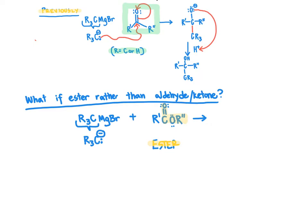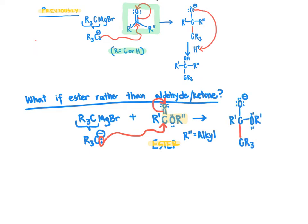That R prime group absolutely has to be an alkyl group in order for this to meet the definition of an ester — we have to have an O-alkyl group there, and that's going to be important to the outcome of this reaction. The first thing we expect in the mechanism is totally analogous to what we saw before: our carbon is very eager to react as a nucleophile, so it comes over and attacks the electrophilic carbonyl carbon, forcing the pi bond up onto the oxygen. What distinguishes this intermediate from before is that rather than having a carbon-hydrogen or carbon-carbon bond, instead we have a carbon-oxygen bond — and that O-alkyl group represents a relatively good leaving group because oxygen is a relatively electronegative atom, and under these basic conditions it will be favorable for that carbon-oxygen bond to break.